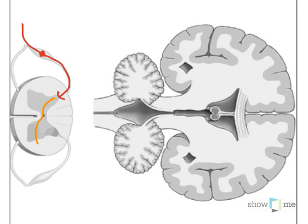As it leaves, we can see that the lateral spinothalamic pathway sits just at the lateral gray horn. So we come off the lateral gray horn into the lateral spinothalamic pathway — that's the third lateral spinothalamic pathway we're discussing here — and we travel all the way up and cross over.